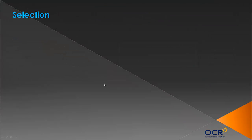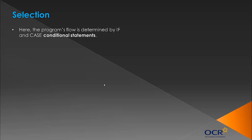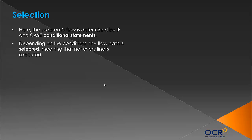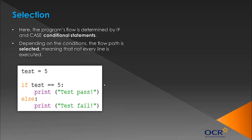Moving on to the second block, which is slightly harder to understand. If you've programmed in high-level programming languages, you should have used this, even if you haven't thought about the theory behind it. The second building block is selection. Here, the program's flow is determined by if and case statements — these are called conditional statements. Depending on the conditions, the flow path is selected, meaning not every line in the code is executed.